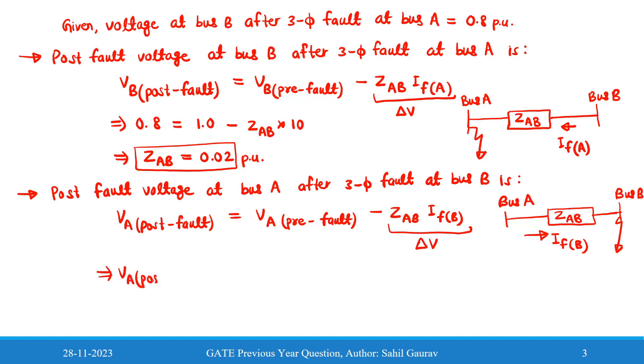V_A(post-fault), voltage at bus A. Pre-fault voltage at bus A is 1.0 per unit, Z_AB we have calculated in the previous expression, and I_fB is 8 per unit. So we will get 1.0 minus 0.16, it will be equal to 0.84 per unit. This is the final answer.